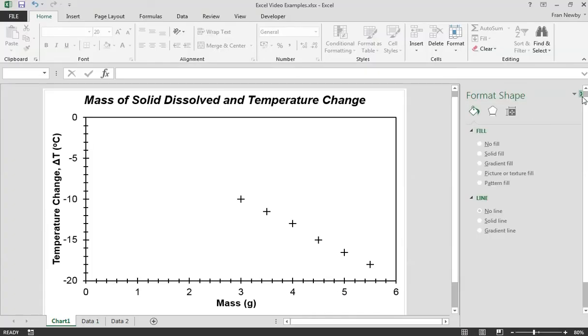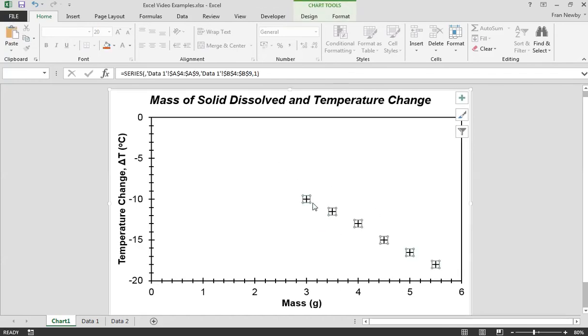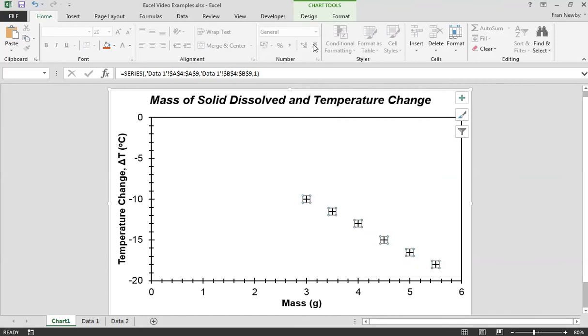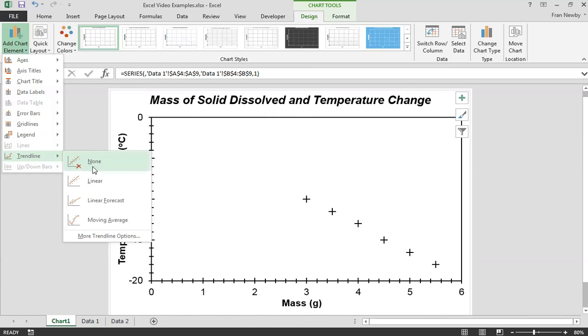We have here an Excel chart, seen in previous videos perhaps, and what I want to do is describe these data with a trend line. There's two ways of doing it: you can either right-click and then add trend line, or if you couldn't get that to work you can go to design, add chart element, and then trend line.